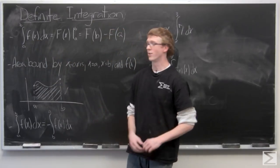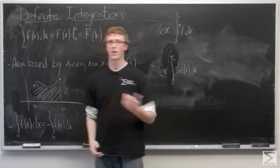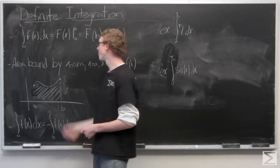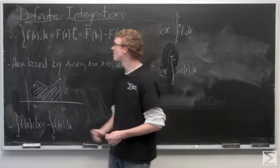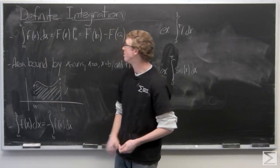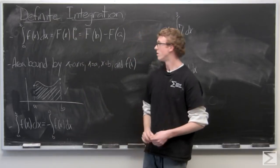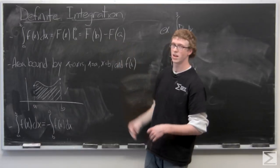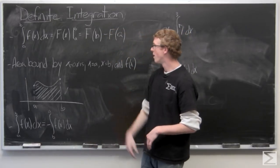So definite integration is integration with bounds a and b here as you can see on top of our integral symbol that we didn't have in the last video. So the integral of f dx from a to b is going to be the antiderivative F from a to b, which this symbol here just stands for F(b) minus F(a). So what this yields is the area bound by the x-axis,